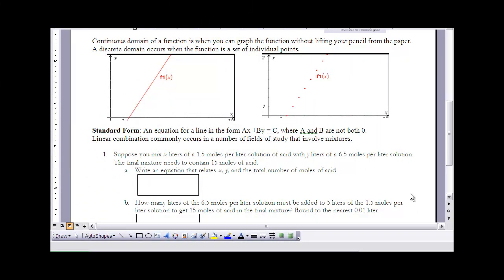When we're looking at functions, there's two different types of domains that we could actually be working with. The first is a continuous domain. When we have a continuous domain, it's a situation where our function, we can graph it without lifting our pencil off the paper. So if you look at this graph right here, f1 of x, that function, I can graph that without lifting my pencil off the paper. So it can continue forever in both those directions. There's an infinite number of x, y ordered pairs that satisfy that function.